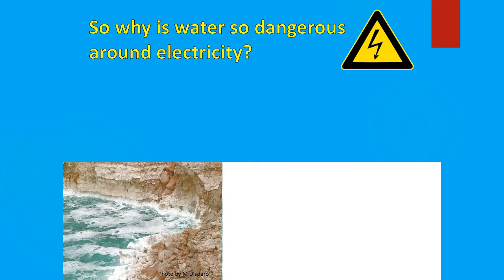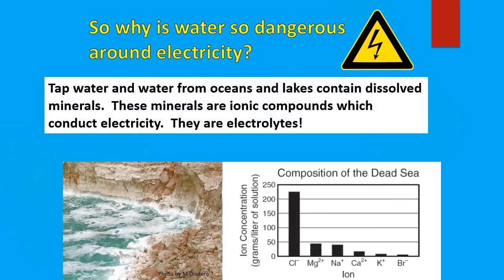Why is electricity dangerous around water? Tap water and water from lakes contain minerals. When these minerals dissolve, they break apart into their ions, making them electrolytes that are able to conduct electricity. If you look at the composition of the Dead Sea and its ion concentration, you can see the large amount of dissolved particles — meaning it is going to be a very good conductor of electricity.